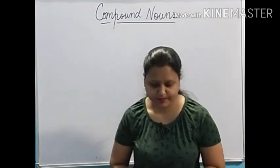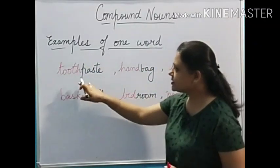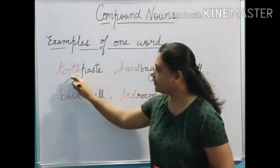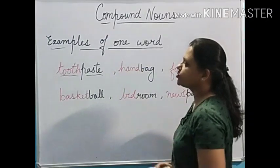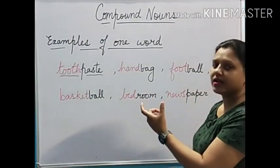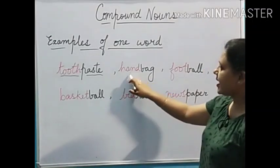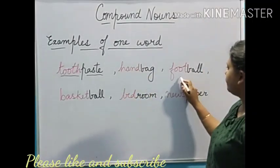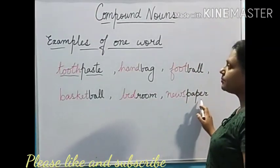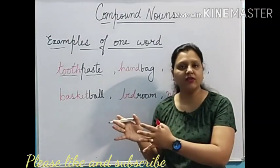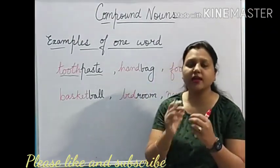Let's see their examples. These are the examples of one word. The first is toothpaste — tooth is a noun, paste is a noun, and joining the two words gives us toothpaste. Similarly, we have handbag — hand, bag, handbag. Foot, ball — football. Basket, ball — basketball. Bed, room — bedroom. Newspaper. So these are the examples of compound nouns formed by joining two words into one.